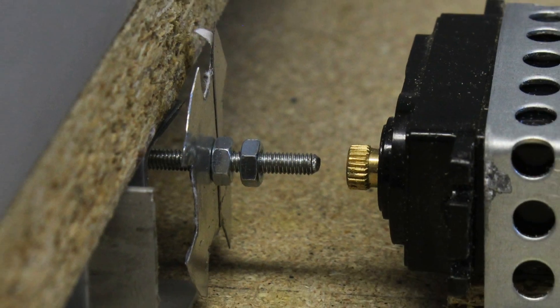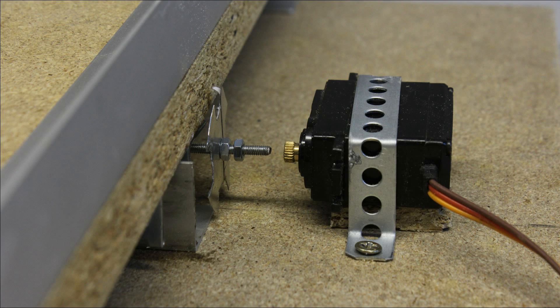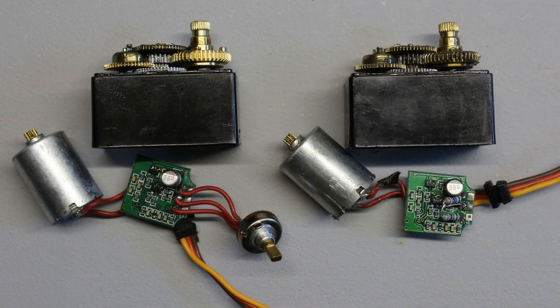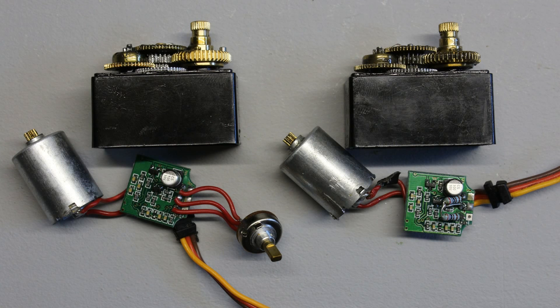The axes are driven by standard servos having metal gears and ball bearings. Two of the servos have to be modified for continuous rotation. First, the stopper on the gear at the output shaft has to be grinded.